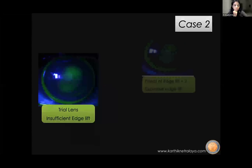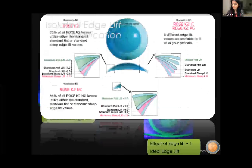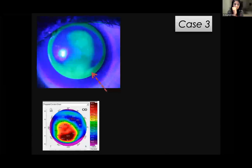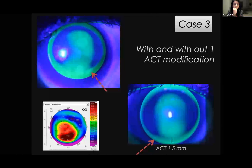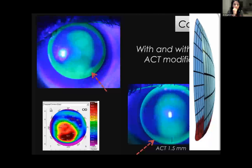The Rose K platform offers many options for adjusting edge lift. For an inferior cone where the superior fit is acceptable but inferior edge is uncomfortable, an asymmetric corneal technology (ACT) modification allows the company to tuck in only the inferior part — a very good option for inferior cones.